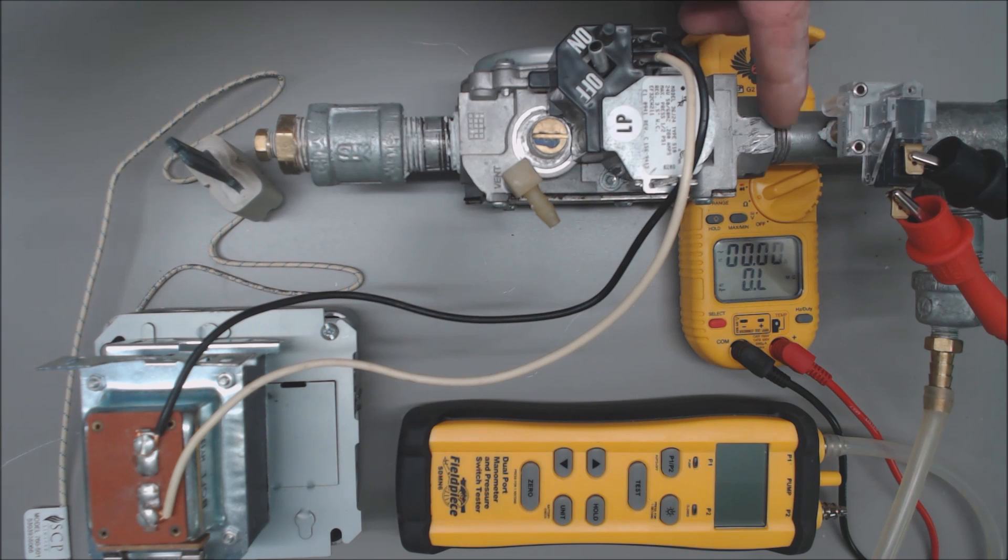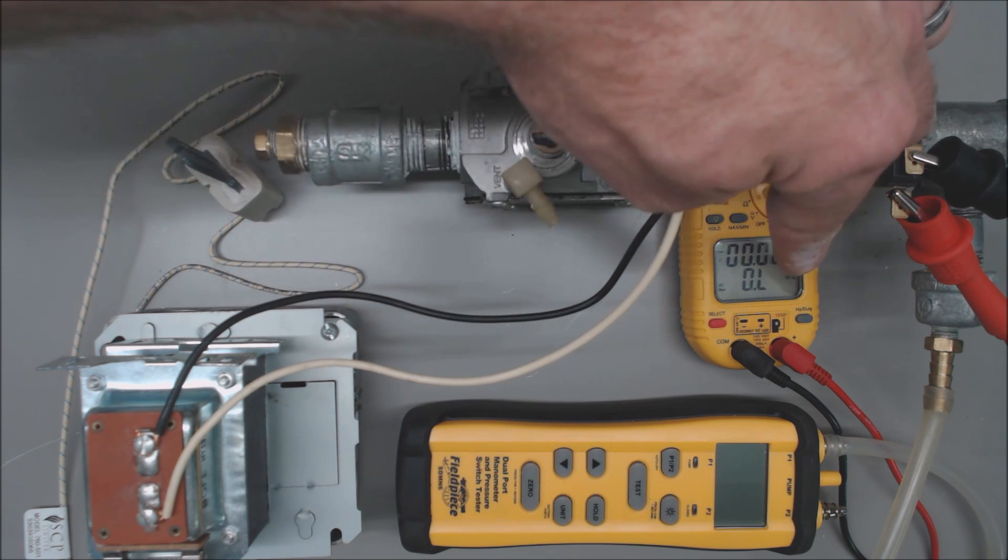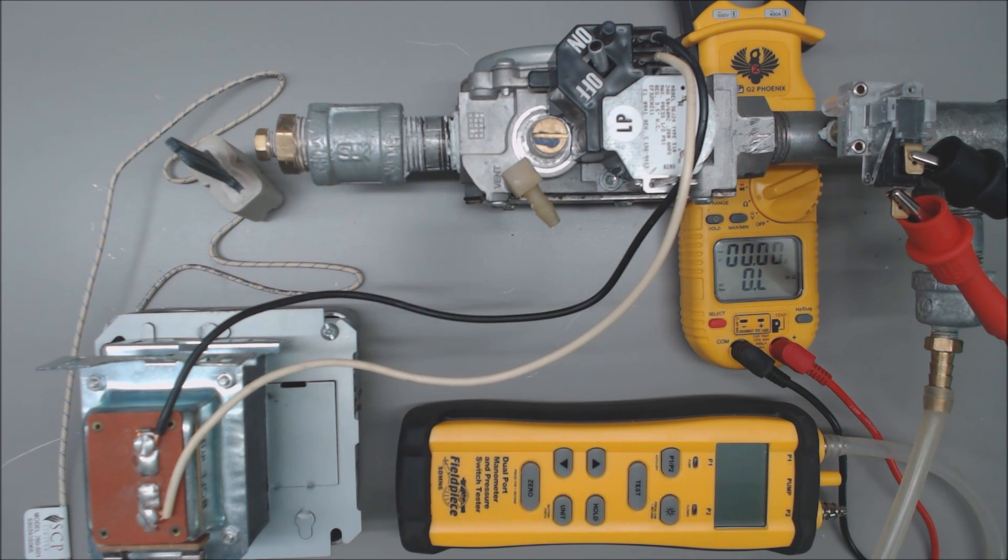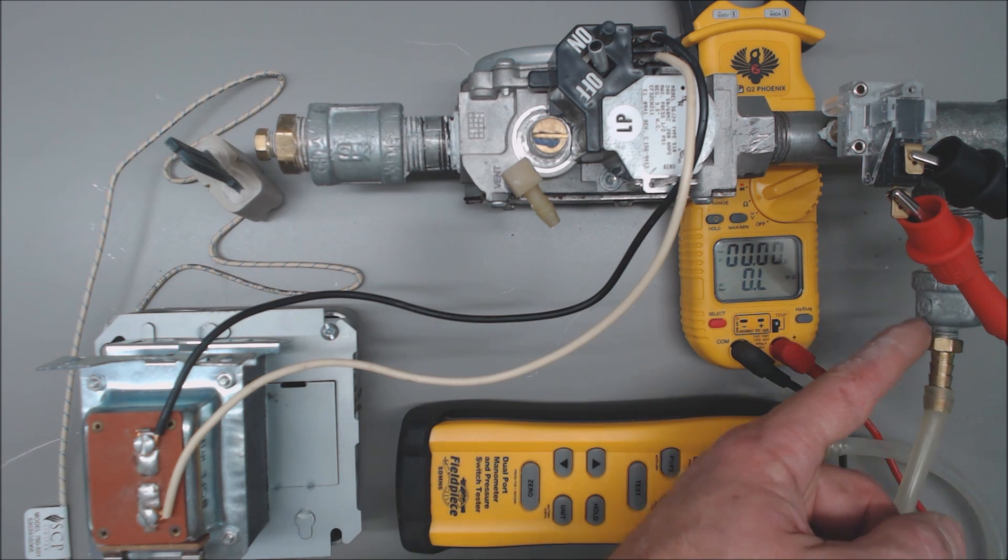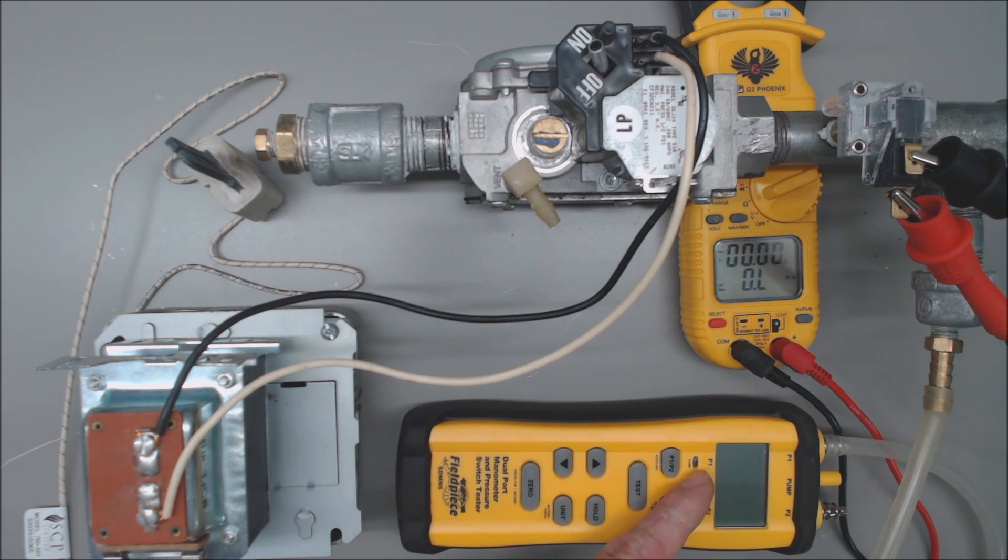Presently the gas is off to this inlet gas line right here and we're reading OL. So that means over limit or open line. We also have a gas tap right here. So we have a half inch cap with a brass barb fitting attached to it going to our SDMN6 dual port manometer.